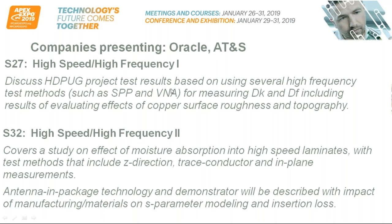We're also looking at laminate materials — high-speed, high-frequency materials. S27 with Oracle and AT&S will discuss HDPUB project test results using several test methods for measuring Dk and Df, including results of the effects of copper surface roughness and topography. We'll also look at a study on the effect of moisture absorption into high-speed laminates with various test methods. We'll also demonstrate the impact of manufacturing materials on S-parameter modeling and insertion loss in antenna and package technology.